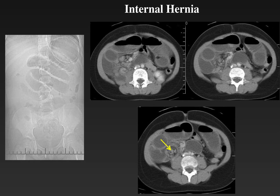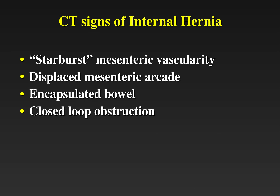On the plain film, we can see dilated stacked loops of small bowel representing the small bowel obstruction. The CT signs of internal hernia include the starburst appearance of mesenteric vascularity, a displaced mesenteric arcade to the side where the hernia occurs, encapsulated bowel, and closed-loop obstruction.